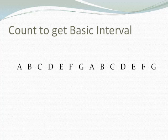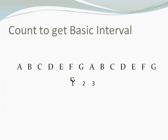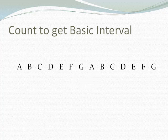No matter where you start — if I start on an F and want to do a major third, I use F as 1, G as 2, A as 3. I know that I'm going to have to name the note as an A, whether it's a major third or minor third. I have to remember that I've got to name the note as an A. Get the basic interval first; after you get the basic interval, then you go to the specific interval.